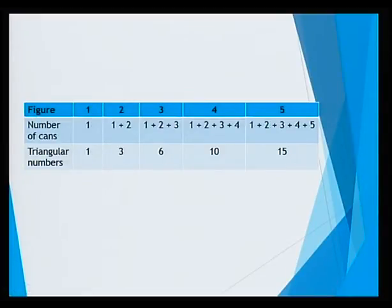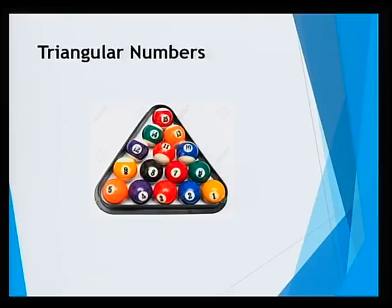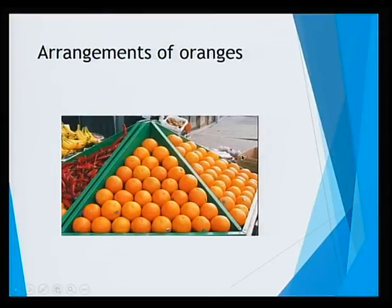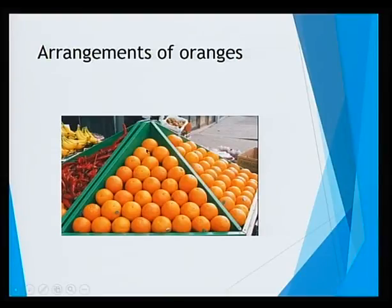Can you think of where triangular numbers are used in real life? One example is bowling balls arranged with one ball in the first row, two in the second, and so on. The second example is when you're going to the market to buy oranges — you can see one orange, two oranges, three oranges arranged in rows. The resulting figure gives a triangle, and these numbers are what we call triangular numbers.